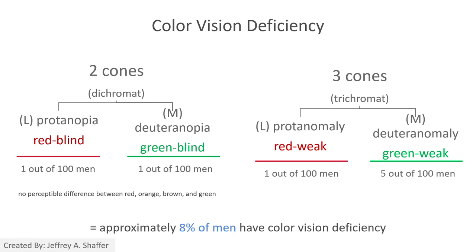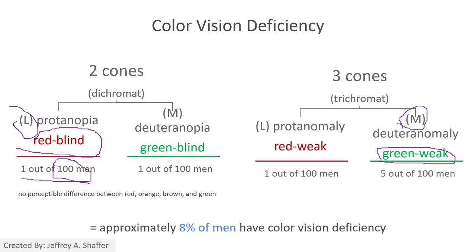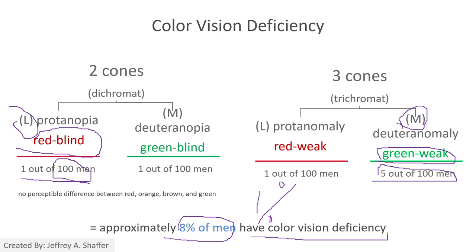People with CVD are either missing one of those cones or have a weak cone. For example, if people are missing the long cone, they will be red blind — one out of 100 males are red blind. If a person has a weak medium cone, they will be green weak, and 5 out of 100 males are green weak. Overall, 8% of men have color vision deficiency, and about 1% of females have CVD as well.